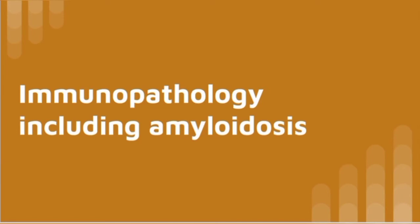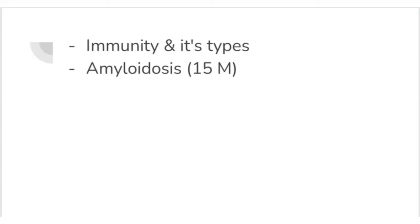Now we will talk about the chapter immunopathology, including amyloidosis. Immunity and its types can be asked, but that is not a very prevalent question from this chapter. From this chapter, only amyloidosis — as a full question — is the most frequently asked topic.